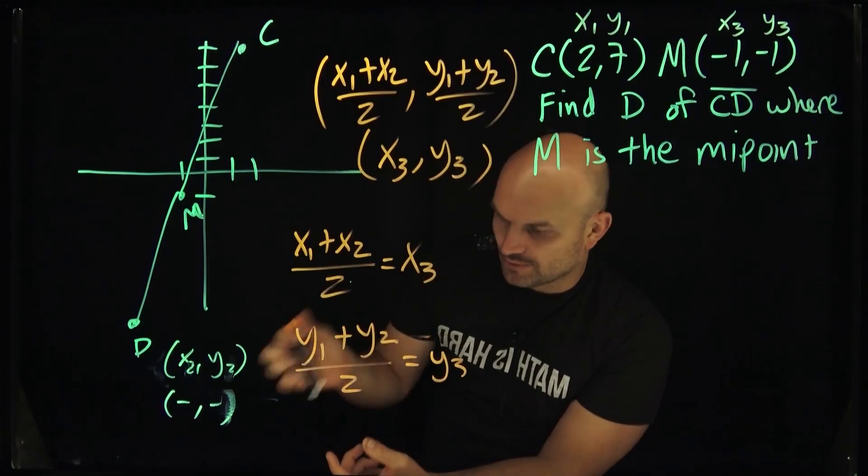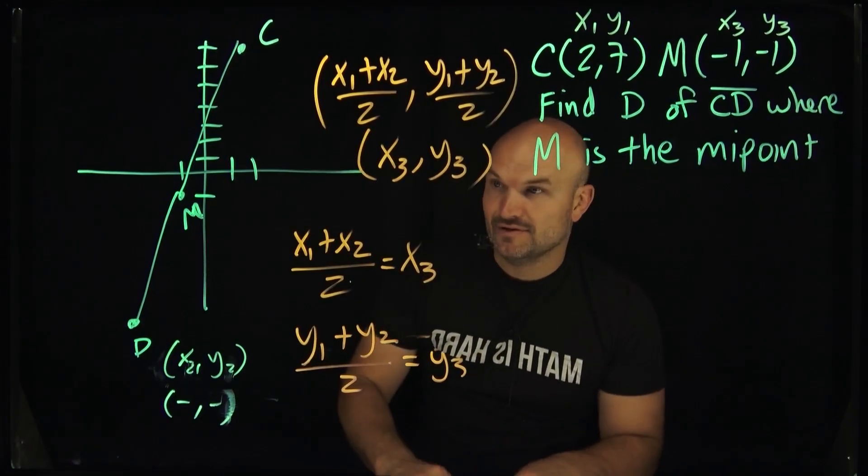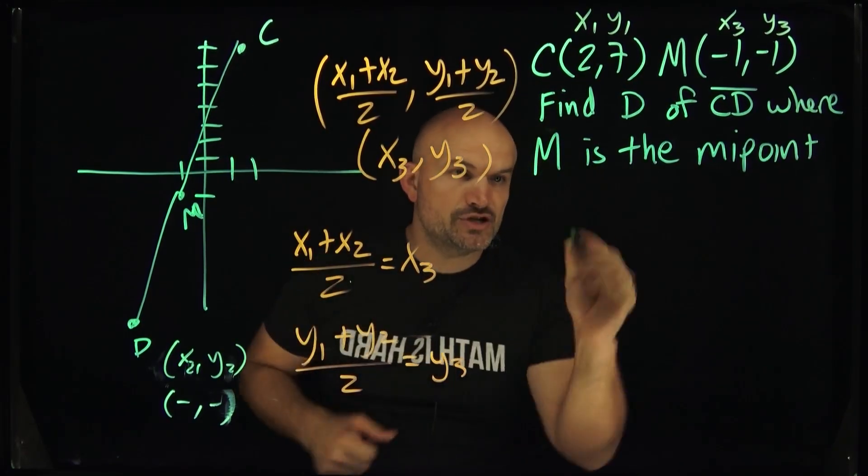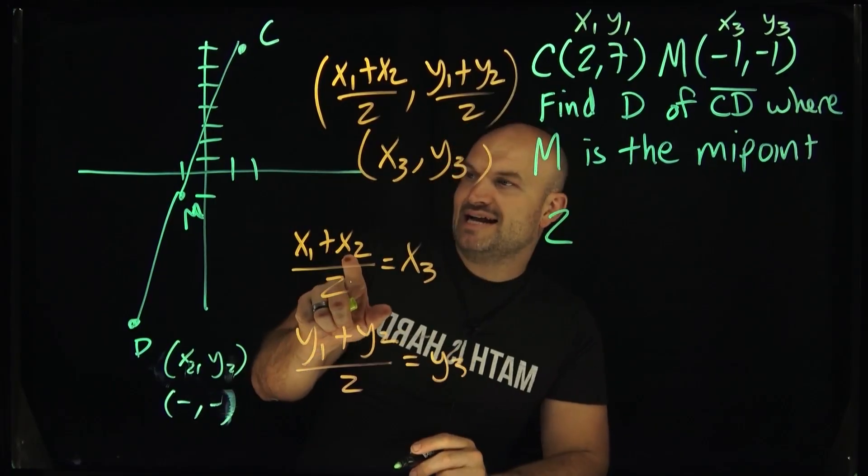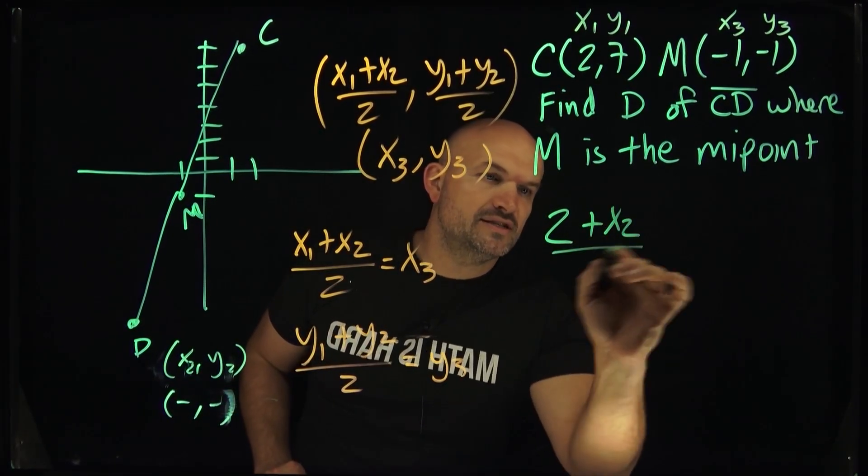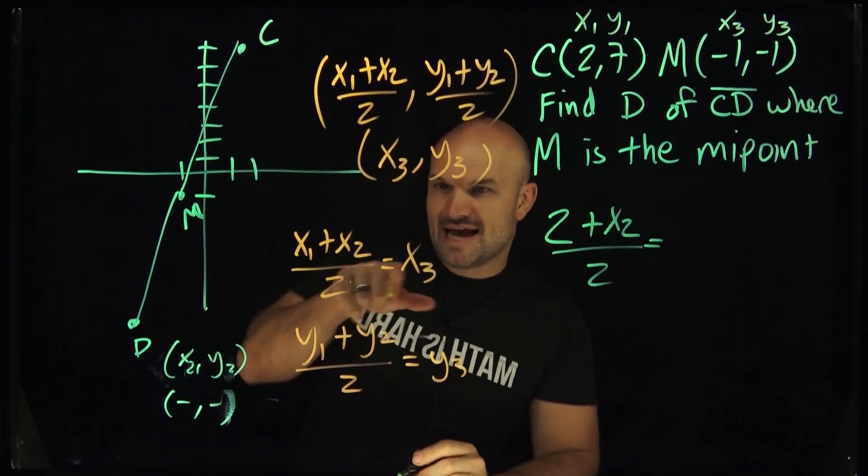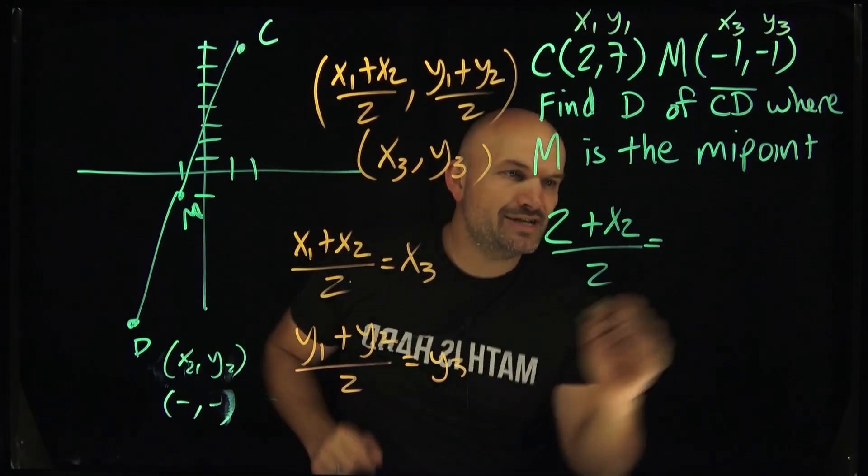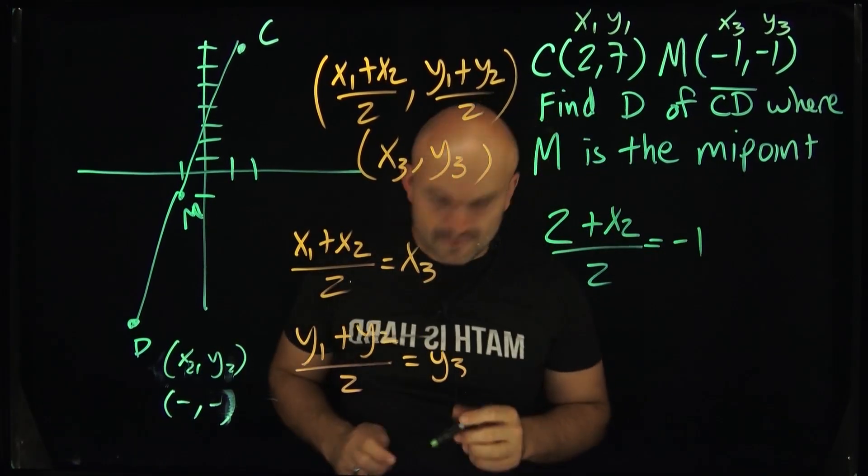So if we look at this original problem or the original information we have, we say, all right, do I have an X1? Yes, that's 2. Do I have an X2? No, I don't know what the X2 is. So it's going to be plus an X2 divided by 2, and that equals X3. Do I know what X3 is? Yes, I do. That's a negative 1.